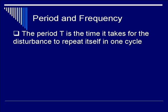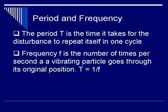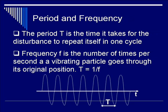Several more definitions are in order, namely period and frequency. The period, T, is the time it takes for the disturbance to repeat itself within one cycle. Frequency, F, is the number of times per second that a vibrating particle goes through the original position. T is inversely proportional to frequency, as depicted by this equation and diagram showing the sound wave as a function of time, with T as the definition of the period between peak to peak.